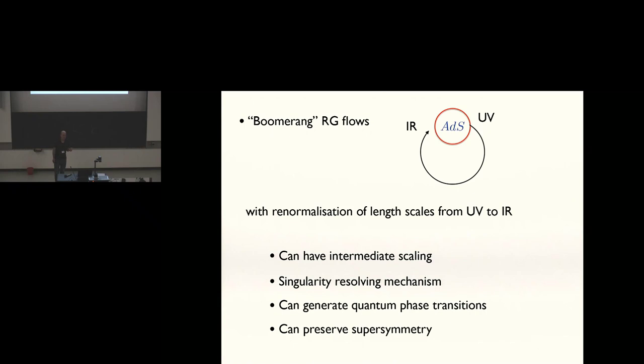Something universal that can happen is they can exhibit intermediate scaling. And again, I'll provide an example later to explain that. They can be viewed as a novel way of resolving singularities in the context of holography. We have RG flows where in the infrared you realize some singular configuration, and you might want to resolve that by some small deformation.